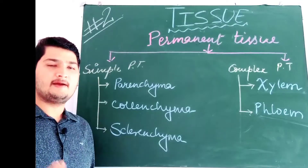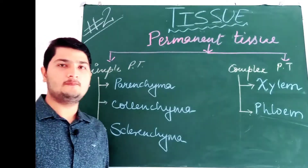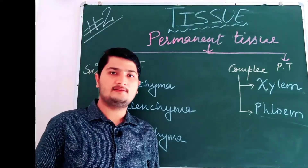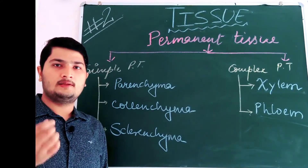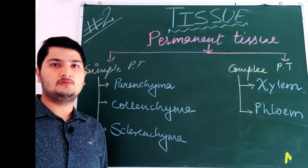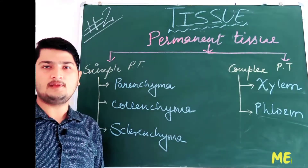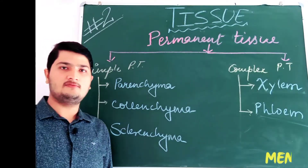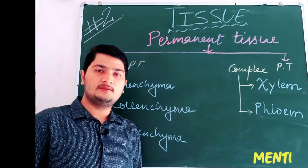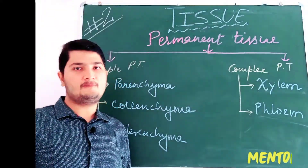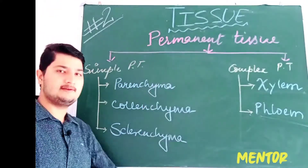Hello dear students, welcome back. In the previous video, we had discussed about the meristematic tissue which is present in the plants. Now in this video, we will discuss about the next type of plant tissue, that is permanent tissue.